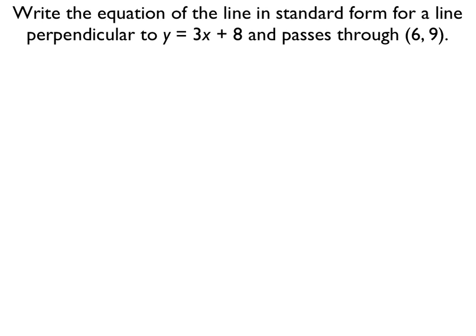In this example, we've got a couple of different things going on. One is we want an equation of a line in standard form, which we've done before. What's different, though, is we want a line that's perpendicular to this given line. And then we've got our point (6, 9).